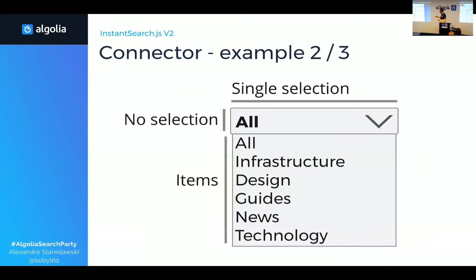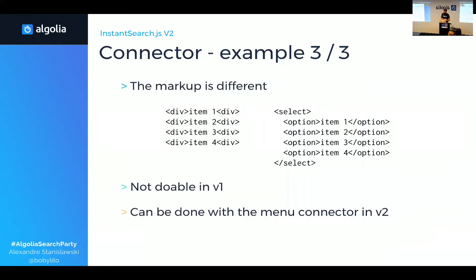The dropdown has the same properties: you can select only one item at a time, display all items, and have a no-selection item. So what if we want to use a dropdown instead of the list of items shown on the blog? It was not really doable in v1, because in v1 we had a built-in rendering. Even though we had options to modify the rendering, we couldn't go from divs for items to a select with options. But it is doable with the new connector API.